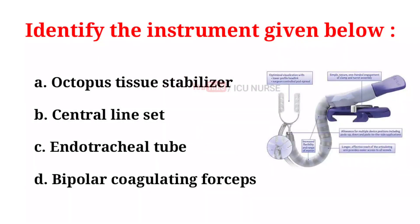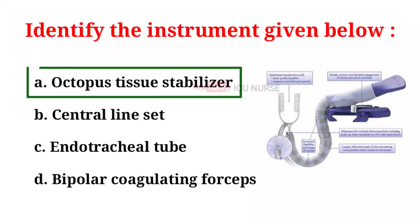Identify the instrument given below. A. Octopus tissue stabilizer. B. Central line set. C. Endotracheal tube. D. Bipolar coagulating forceps. And the correct answer is A. Octopus tissue stabilizer.